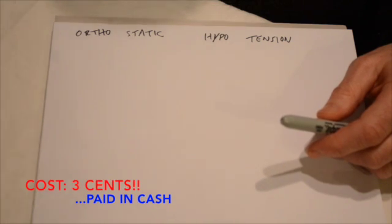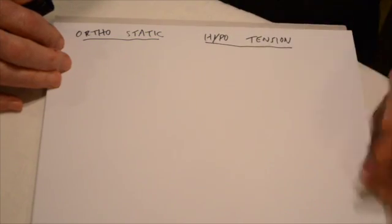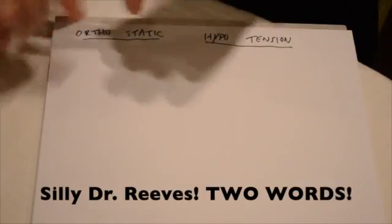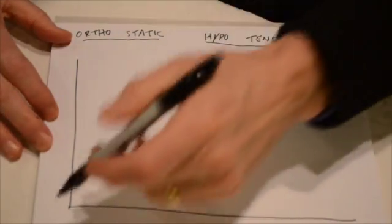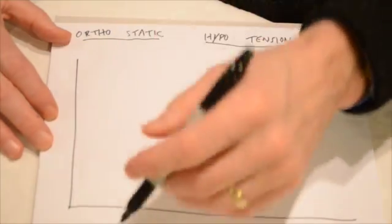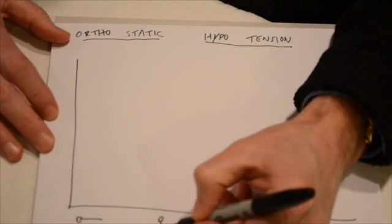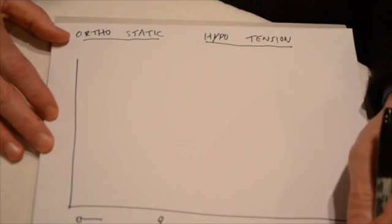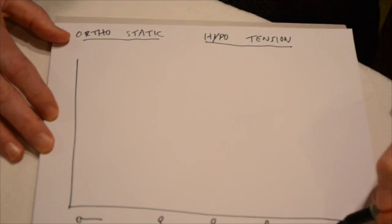How much is too much? Now we're going to go to the fancy graphic. Orthostatic hypotension — I decided to separate out the words because it's kind of cool. Here's a graph. I'm going to draw three lines positioned as: lying down, standing immediately, standing at one minute, standing at three minutes, and sometimes standing at five minutes.